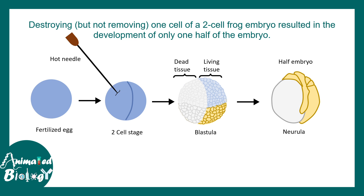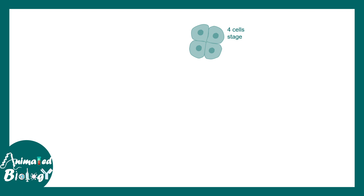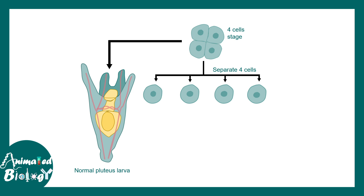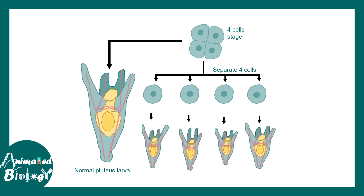However, this idea was challenged by another elegant experiment done by Wilhelm Roux, Weismann, and colleagues. They took sea urchin eggs at the four-cell stage — which normally give rise to a pluteus larva — and dissociated the cells by vigorous shaking, separating each blastomere. To their surprise, each of these blastomeres gave rise to an entire pluteus larva.